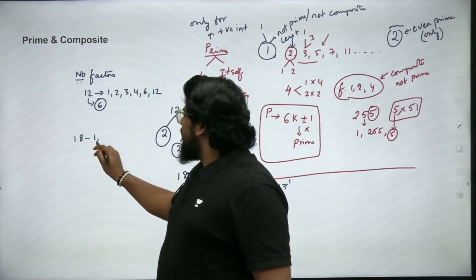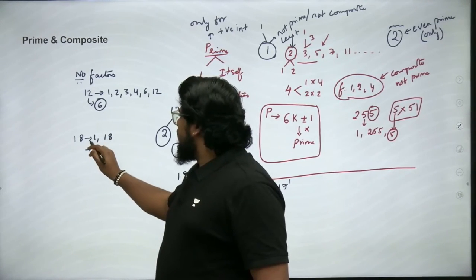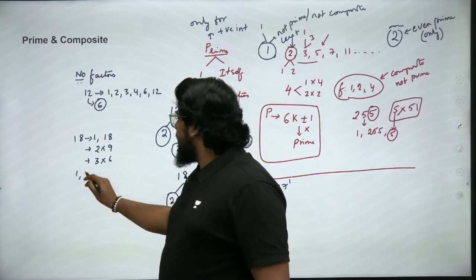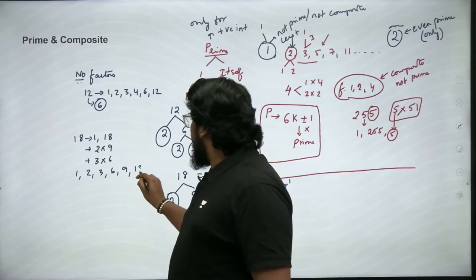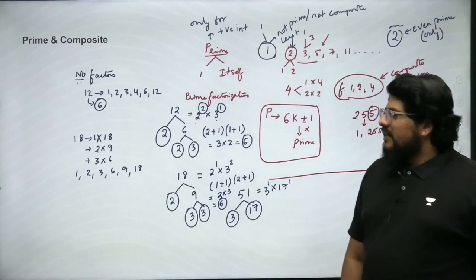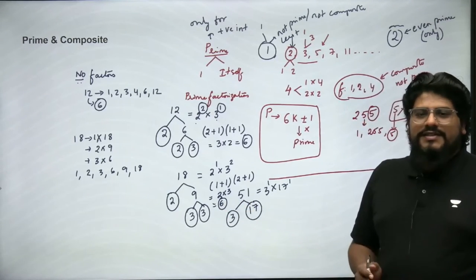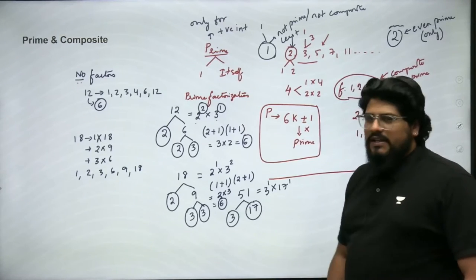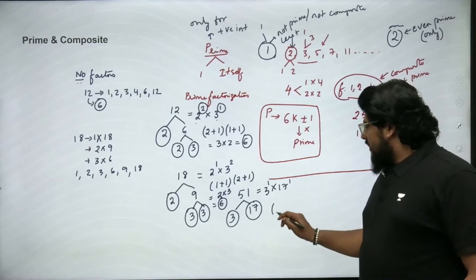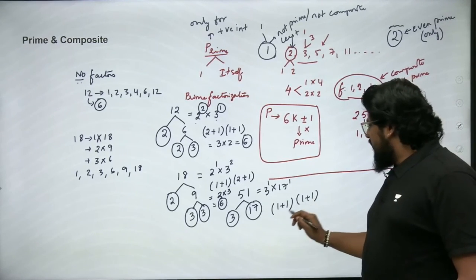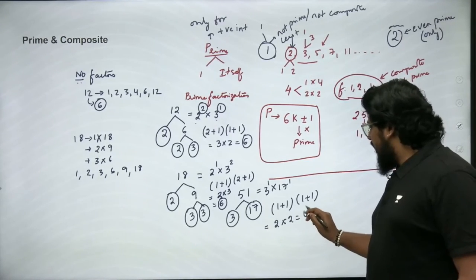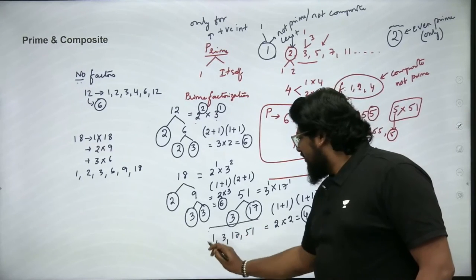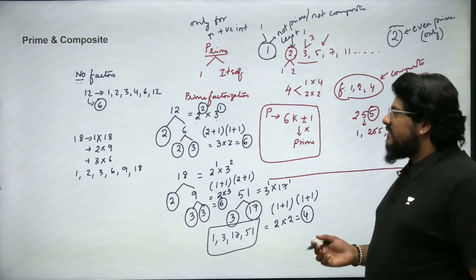Even 18 has 6 factors. Let us quickly check: factors of 18 are 1 and 18, 2 and 9, 3 and 6 — so 1, 2, 3, 6, 9, 18. Yes, these are the 6 factors of 18. We can calculate the number of factors using the prime factors' powers plus one's product. For 51, how many factors? It is (1+1) × (1+1) = 2 × 2 = 4 factors. Those 4 factors are 1, 3, 17, and 51.